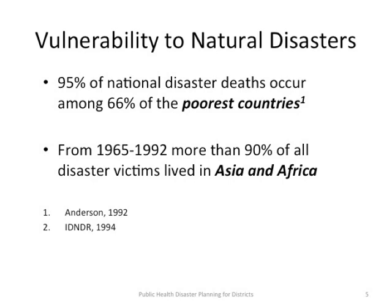Vulnerability to natural disasters: 95% of natural disaster deaths occur among 66% of the poorest countries. From 1965 to 1992, more than 90% of all disaster victims lived in Asia and Africa.